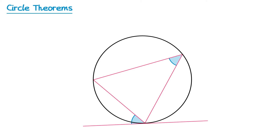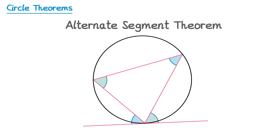The same happens with the chord on the other side as well. If you look at the chord on the right hand side, the angle it makes with the tangent equals the angle that chord creates at the circumference in the other segment. So these two angles are also equal. We call this the alternate segment theorem, and you'll need to know this name.